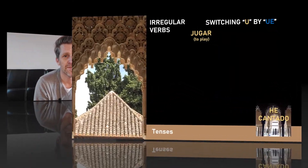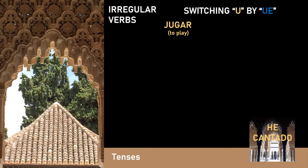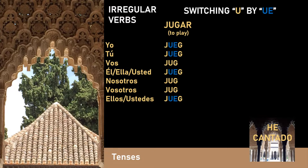Another case is when we replace the U by the diphthong UE. Let's see the case of a verb in which the U is being replaced by the diphthong UE, for example the verb jugar. The conjugation is as follows: yo juego, tú juegas, vos jugás, él/ella/usted juega, nosotros jugamos, vosotros jugáis, ellos/ustedes juegan.